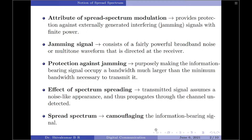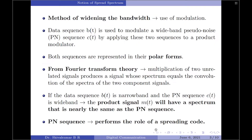We may think of spread spectrum as a method of camouflaging the information-bearing signal. One method of widening the bandwidth of an information-bearing sequence involves the use of modulation — specifically, the data sequence b(t) is used to modulate a wideband pseudo-noise sequence, also called a PN sequence. By applying these two sequences to a product modulator (simply a multiplier), both sequences must be represented in their polar forms — that is, two levels equal in amplitude and opposite in polarity. For example, symbol 1 is represented by +1 and symbol 0 by −1.